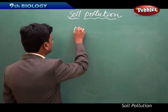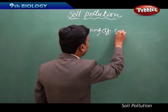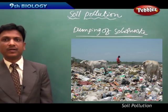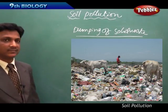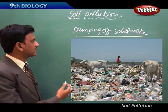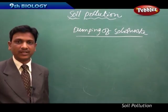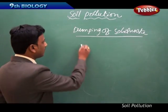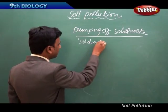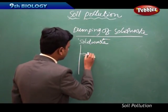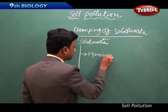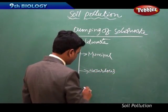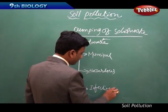Now let us see the other cause - dumping of solid waste. Dumping of solid waste affects the soil conditions adversely. The solid waste can be broadly classified into three types: one is household waste or municipal waste, second one is hazardous waste, and third one is infectious waste.